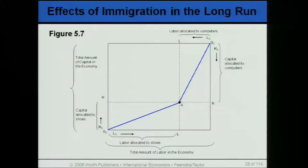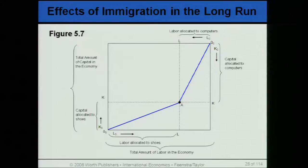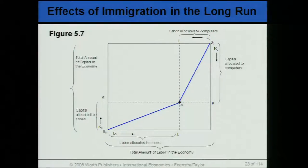Because labor increases in both sectors, the marginal productivity of labor goes down, so wages go down in the short run. But the marginal productivity of capital and marginal productivity of land increases in the short run. We will further see the empirical evidence of the effects of immigration in the short run.